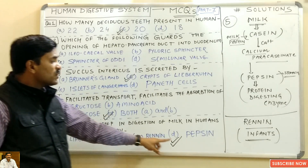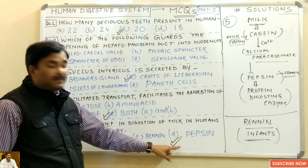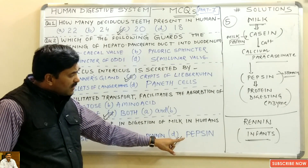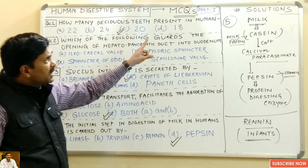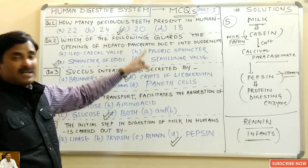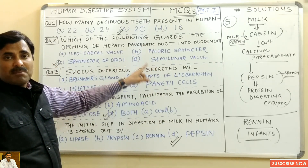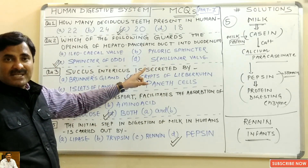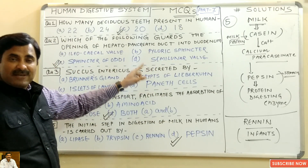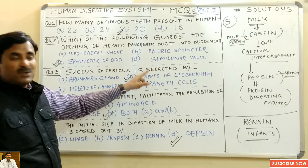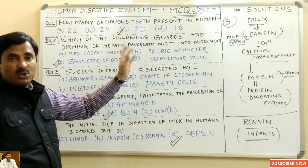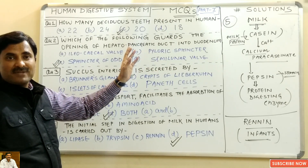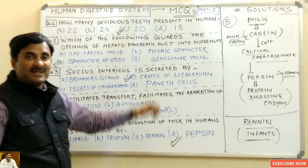So the initial step in digestion of milk in humans is carried out by pepsin. Students, this was the MCQs based on the human digestive system. Keep watching my videos — you will soon be getting part 2 of the digestive system. Thanks a lot!